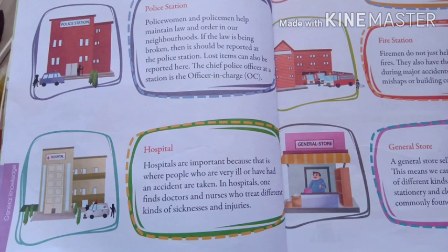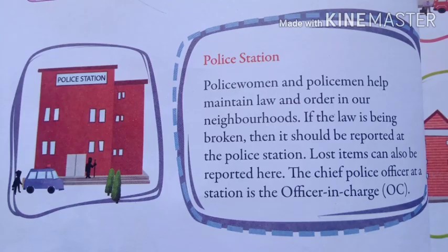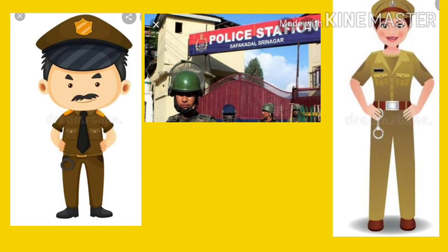Let us discuss the first landmark — the police station. Policewomen and policemen help maintain law and order in our neighborhoods. Law means rules that are made, and if the law is being broken, it should be reported at the police station. The policemen and policewomen help in maintaining law and order, and because of them we are able to live peacefully. They help in catching thieves, controlling crime, and lost items can also be reported at the police station. They are very helpful to us and they are located near our locality.